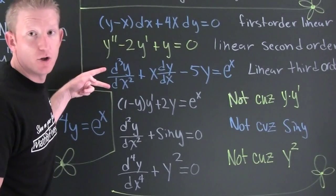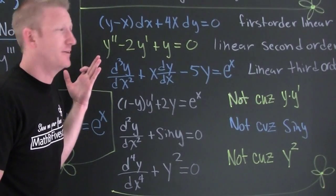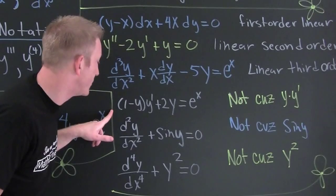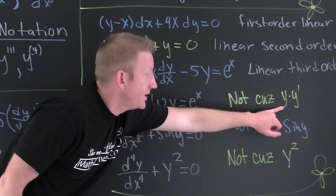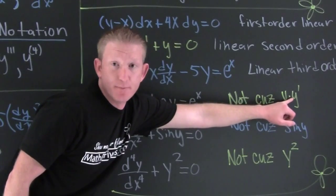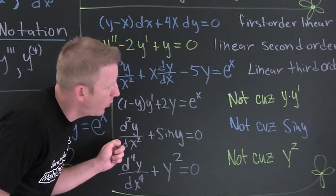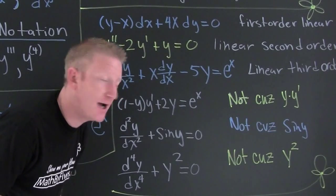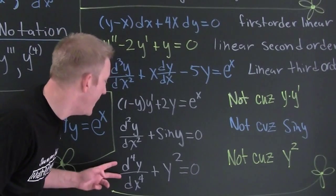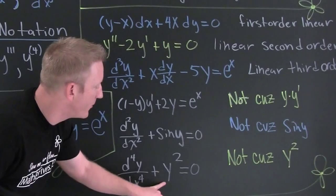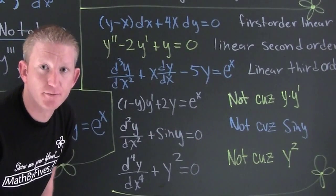This next one is not linear. Why? Because we have a product here, and that is not a linear combination — it's a multiplicative combination. And down here this is also not linear because we have the composition of sine of y, and that composition is not additive. And this last one — you might want to say it's fourth order, but the function itself is not linear, so it is also not linear.